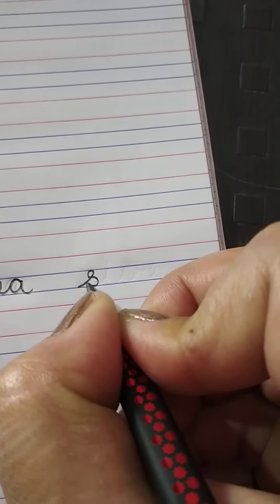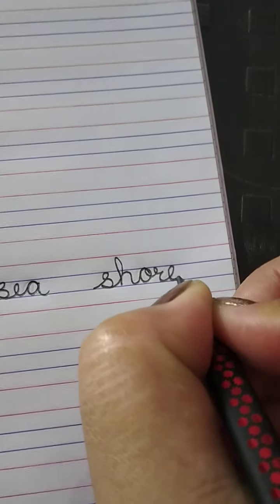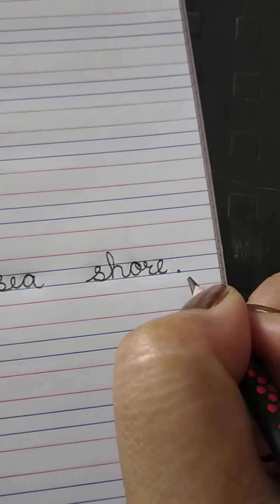Shore: S, H, O, R, E. And then full stop. When our sentence is complete, we give full stop.